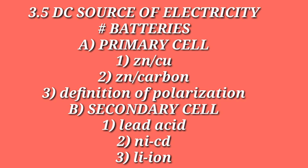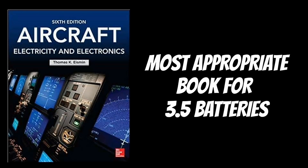Now, 3.5 covers DC sources of electricity, one of the most important topics in Module 3 — that is, batteries. In this we have primary cells which include zinc-copper and zinc-carbon. Remember the voltage values, anode and cathode materials, their charges and the definition of polarization. In secondary cells we have lead-acid, nickel-cadmium and lithium-ion cells. The most appropriate book to study batteries is 'Aircraft Electricity and Electronics' authored by Eismin, which covers batteries very nicely and it is a vast topic.